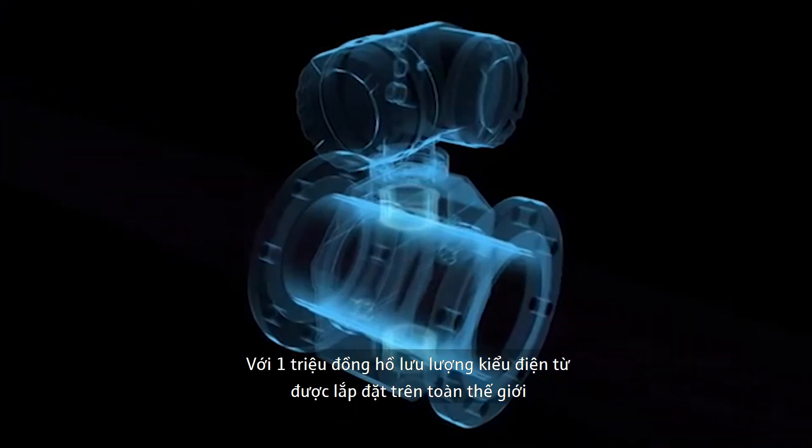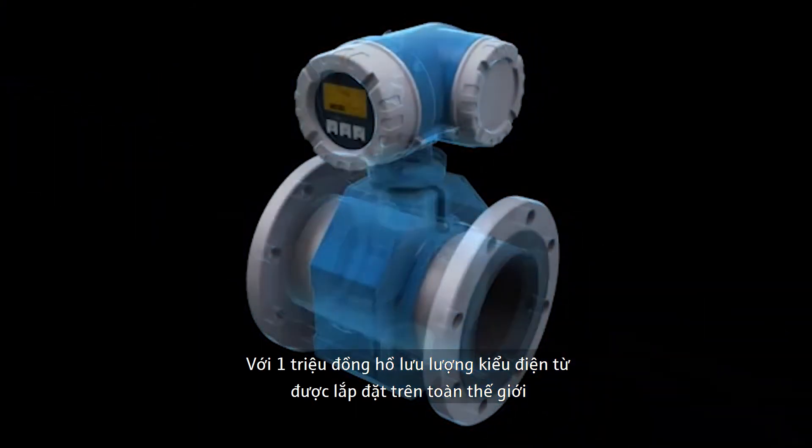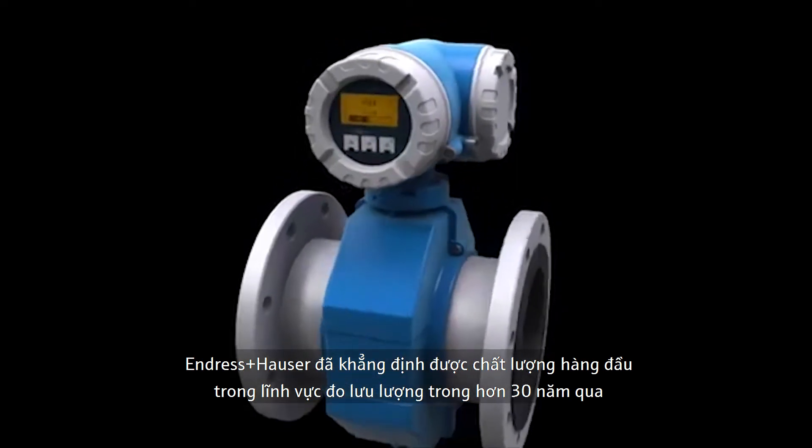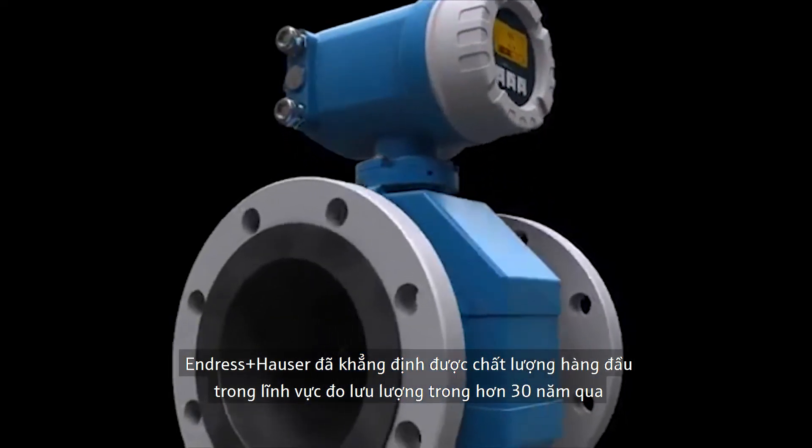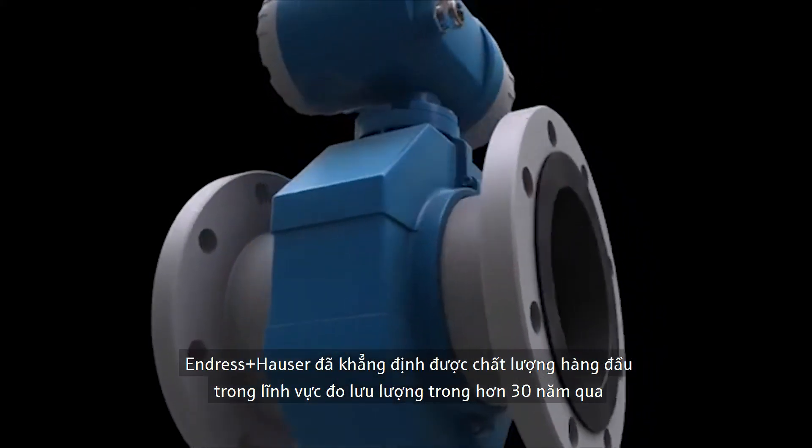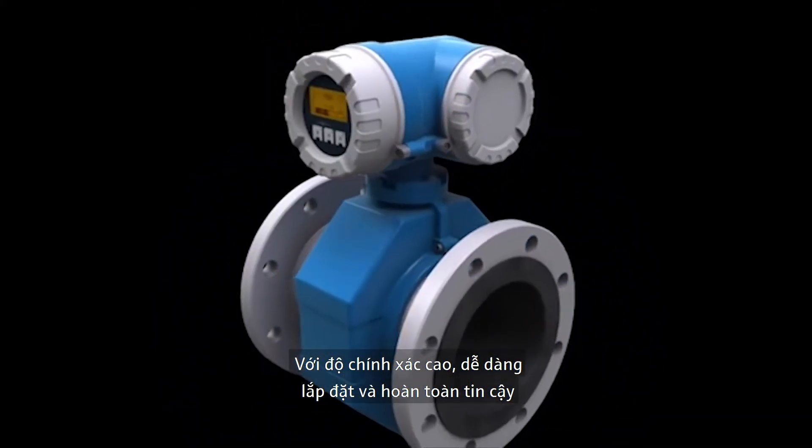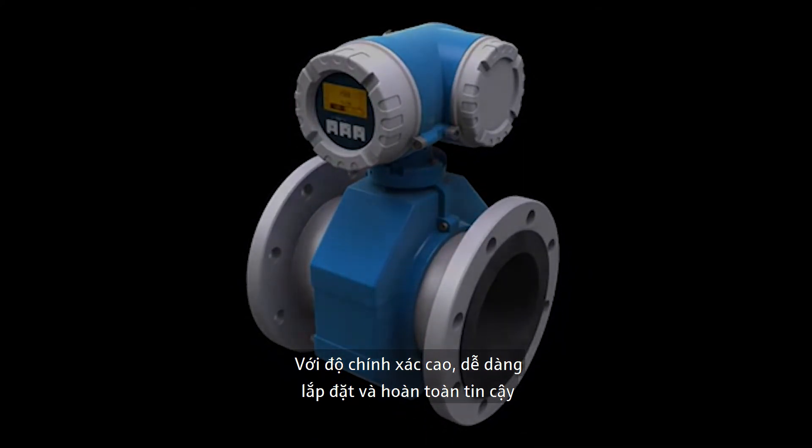With an installed base of over one million electromagnetic flow meters, Endress and Hauser has stood for flow expertise and superb product quality for over 30 years. In other words, high accuracy, easy installation, and absolute reliability.